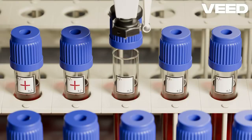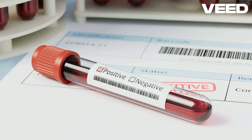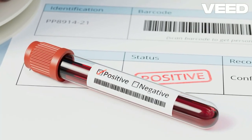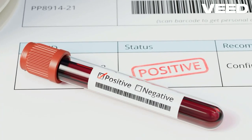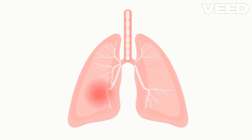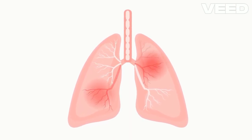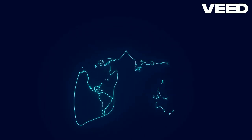Tuberculous laryngitis is a rare yet serious condition caused by mycobacterium tuberculosis infecting the larynx. It often occurs as a secondary manifestation of pulmonary TB and can involve the vocal cords, epiglottis, and other laryngeal structures. TB laryngitis accounts for about 1% of all TB cases. It is more common in regions with high TB prevalence and typically affects adults, with men being more commonly infected than women.